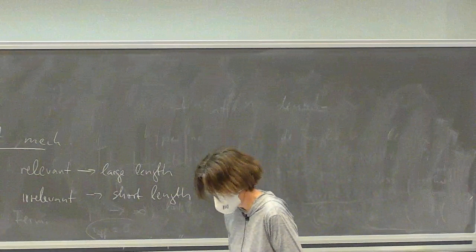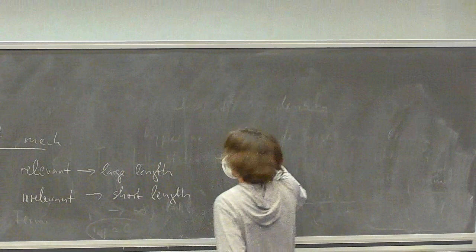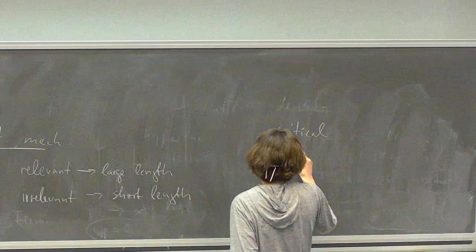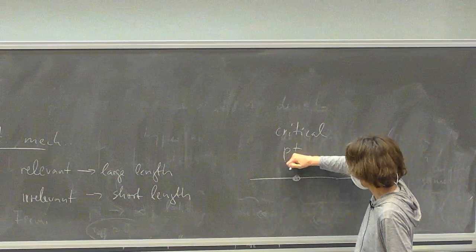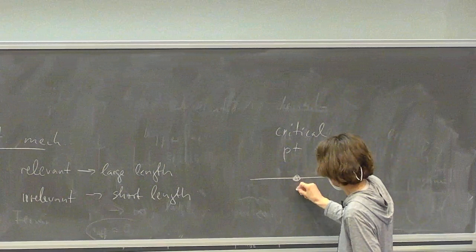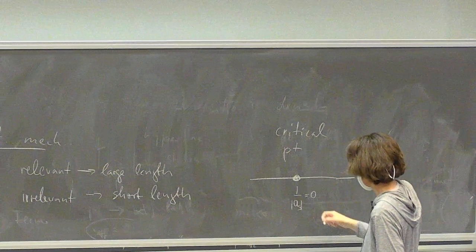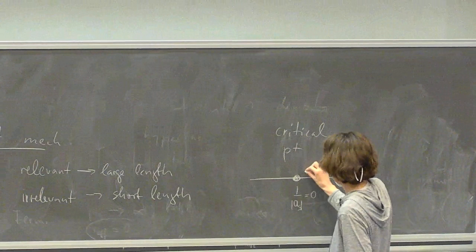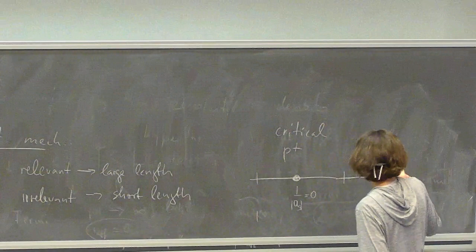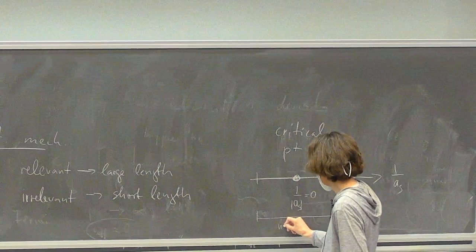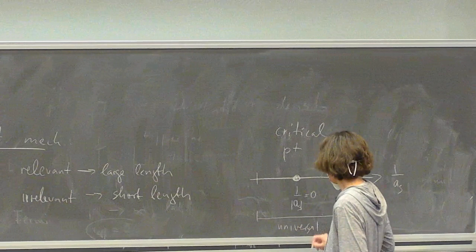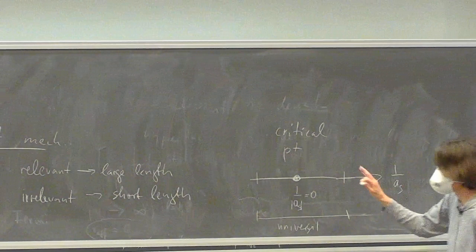In statistical mechanics, we have a critical point with deviations from it. At that point, correlation lengths diverge — this would be our point where the inverse scattering length is zero, giving us an infinitely large scattering length. Away from this, moving 1 over A_S away, we have some regime where we might be universal. This gives us similarity with how universality works in statistical mechanics.